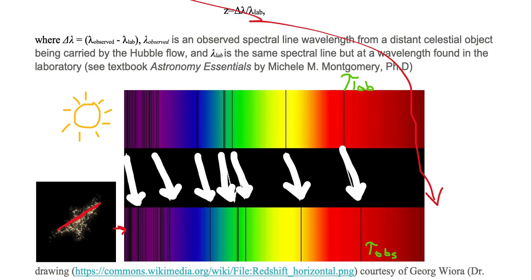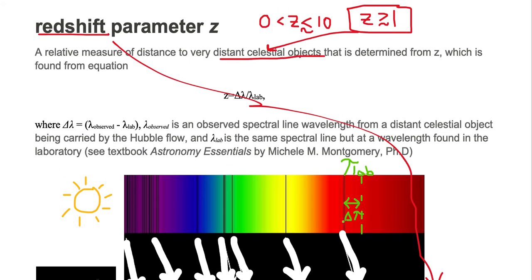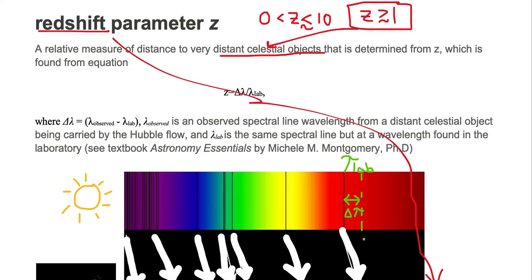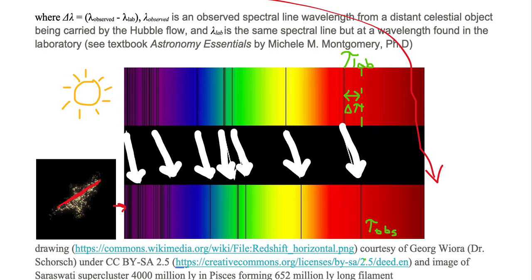So what we need to do is we need to determine, we're going to bring this line up. This line right here is the observed line. And what we need to find is the amount of shift, which we call delta lambda. So to determine z, you need to know the amount of shift between the line in the solar spectrum and the line that's found in the distant object spectrum.